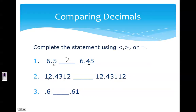For number two, they both have twelve as a whole number, so I start looking at the tenths place — I have a four and a four. Now I have to look at the hundredths: I have a three and a three. Now the thousandths: one and one. Ten-thousandths: two and one. Here they're different, and two is greater than one, so 12.4312 is greater than 12.4311. Even though this number has more decimal places, this number is the larger number.